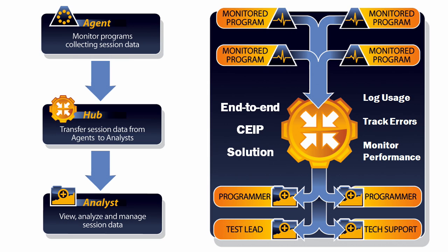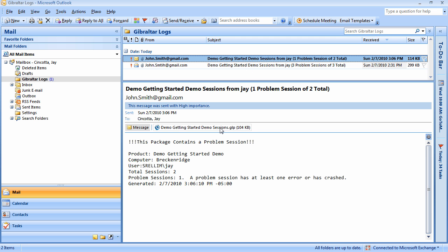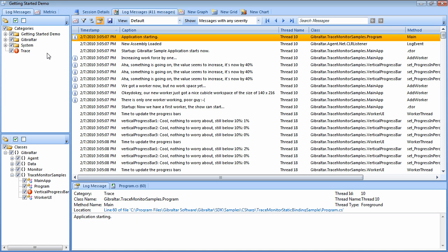Besides making it easy to add Gibraltar, we also make it easy to gather session data from your users with the various servers your software runs on. We put all that data at your fingertips and make it easy to analyze — no more asking users to zip up logs from obscure hidden folders or pouring through mountains of unstructured data in Notepad. For example, the Gibraltar Agent can be configured to email you log files automatically or on demand. Double-clicking the attachment opens the data in Gibraltar Analyst, which lets you quickly find the exact line of source code associated with each error.